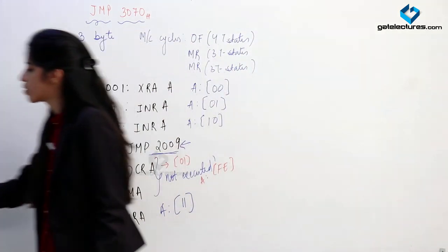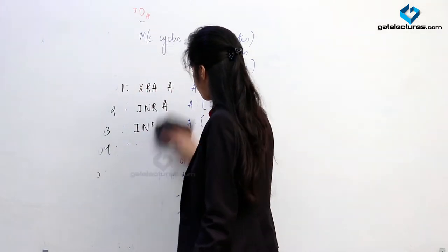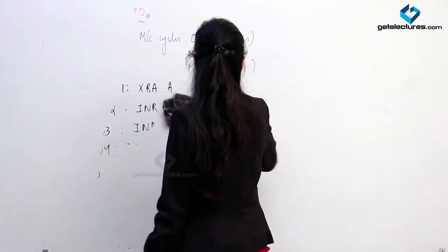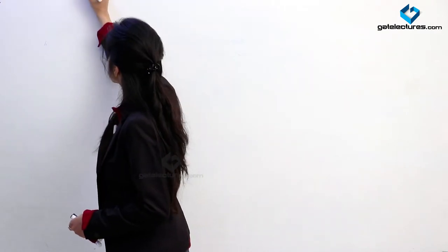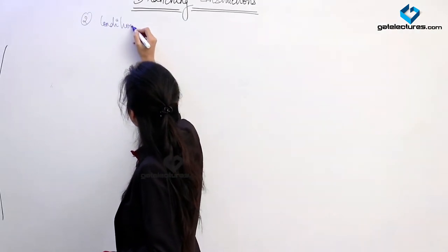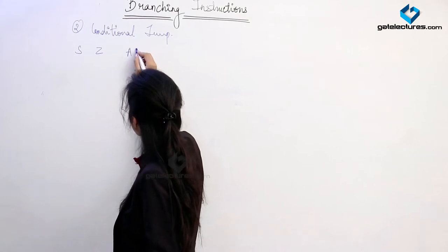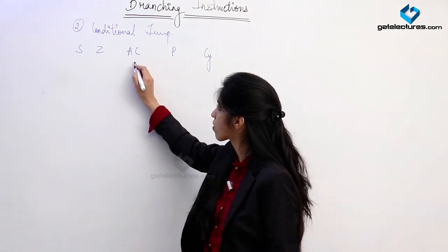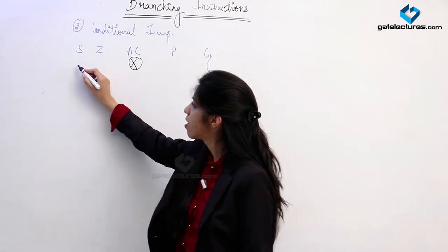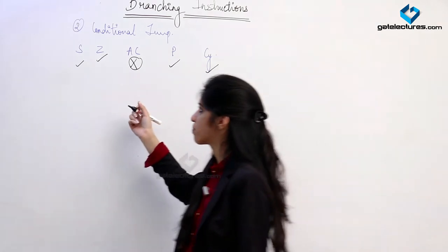Next we are having conditional jump. The 8085 microprocessor has 5 flags, which we have already studied. Based on those flags, we are having conditional jumps. The 5 flags are: sign flag, zero flag, auxiliary carry flag, parity flag, and carry flag. We are not having any jump instruction for the auxiliary carry flag, but we have jump instructions based on sign, zero, parity, and carry.